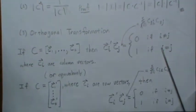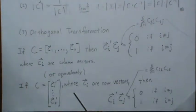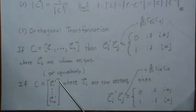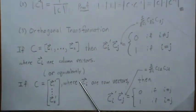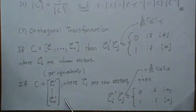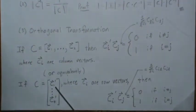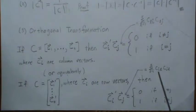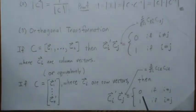This orthogonal property also works for the rows. If we represent C by its rows — where each row is a k-dimensional vector — then multiplying two different rows gives zero, and multiplying a row by itself gives one. In scalar notation, you sum element by element: first element times first element, plus second times second, and so on. The result is zero if the row indices are different, and one if they're the same.